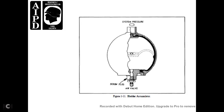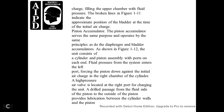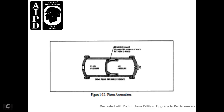Piston Accumulator. The piston accumulator serves the same purpose and operates on the same principle as the diaphragm and bladder accumulators. As shown in figure 1-12, the unit consists of a cylinder and piston assembly with ports on each end. Fluid pressure from the system enters the left port, forcing the piston against the initial air charge in the right chamber of the cylinder. A high-pressure air valve is located at the right port for charging the unit. A drilled passage on the fluid side of the piston provides lubrication between the cylinder walls and the piston.